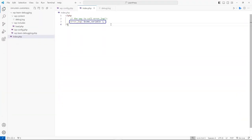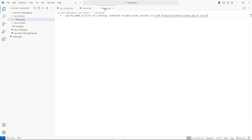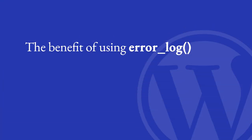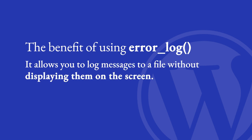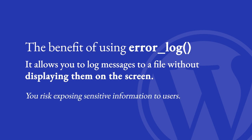This will log the value of some variable to the debug log file, so you can see what it contains at that point in your code. The benefit of using error_log is that it allows you to log messages to a file without displaying them on screen. If you display them on screen, especially in a production environment, you risk exposing sensitive information to users. It's also sometimes quicker to see the output in a log file rather than having to search through a long list of output on the screen.